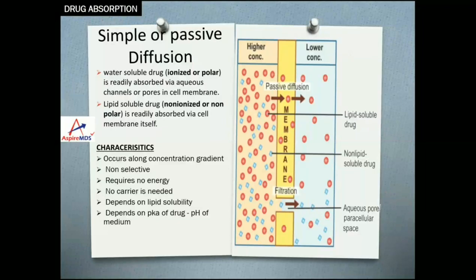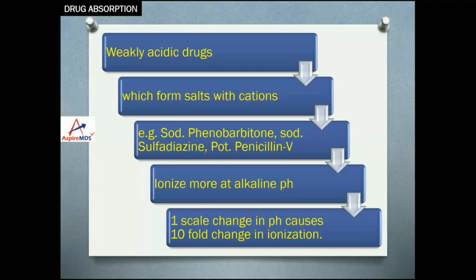Weakly acidic drugs that form salts with cations — for example sodium phenobarbitone, sodium sulfadiazine, potassium penicillin V — ionize more at alkaline pH. That is, weakly acidic drugs will be more ionized at alkaline pH. This ionized part is water-soluble and cannot easily pass through the cell membrane. So the weakly acidic drug will become less effective in alkaline pH. One unit change in pH will cause a tenfold change in ionization, so even a small pH change will cause significantly more ionization.